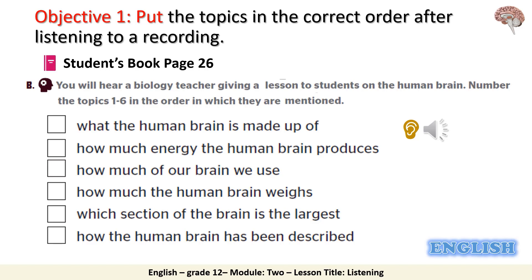The left side communicates with the right side of your body, and the right side with your left, and researchers remain puzzled as to why. One of the greatest myths surrounding the brain is that 90% of it is inactive — that we only use 10% of it. In reality, every part of the brain performs a role. The brain is believed to have as many as 100 billion neurons, a special type of nerve cell capable of sending signals between different parts of the brain and body. Research suggests that as we learn new things, our neurons form brand new connections, changing the brain on a physical level.